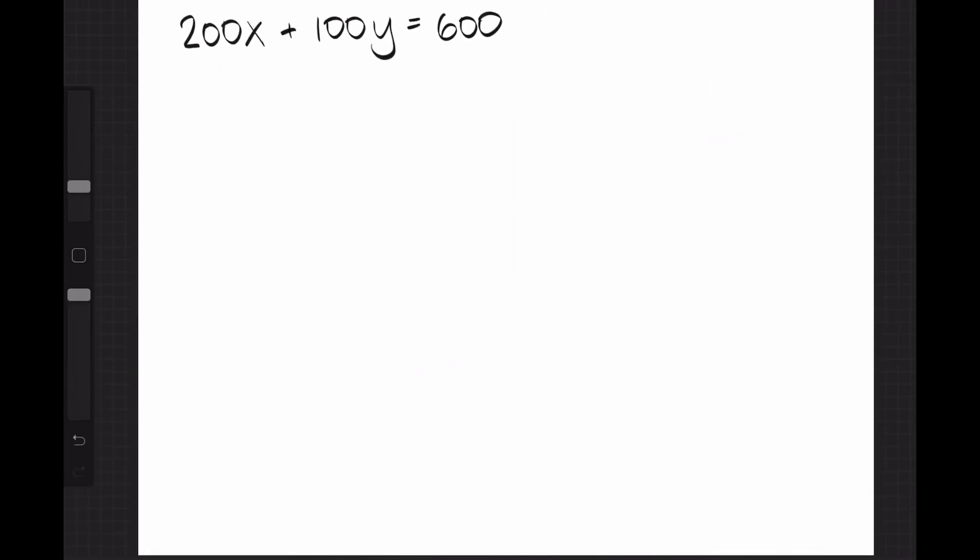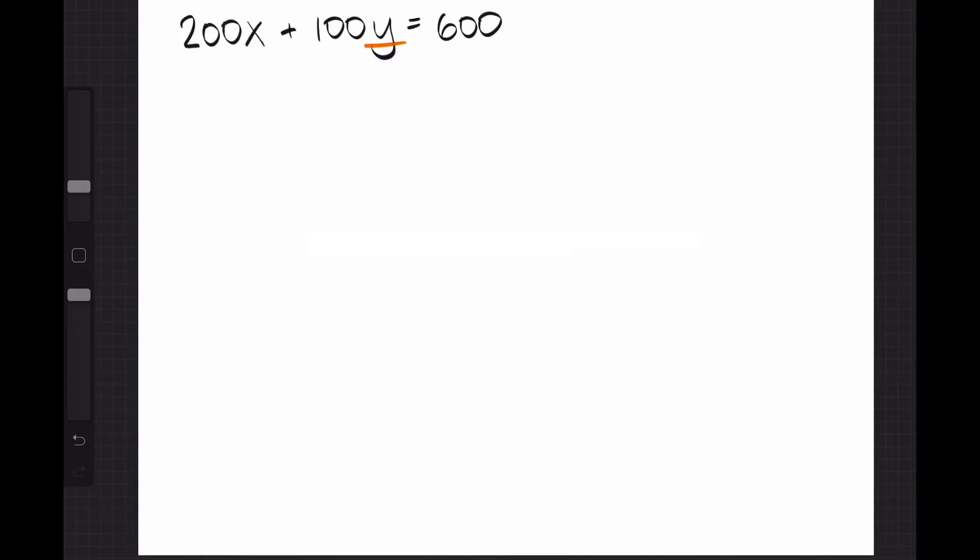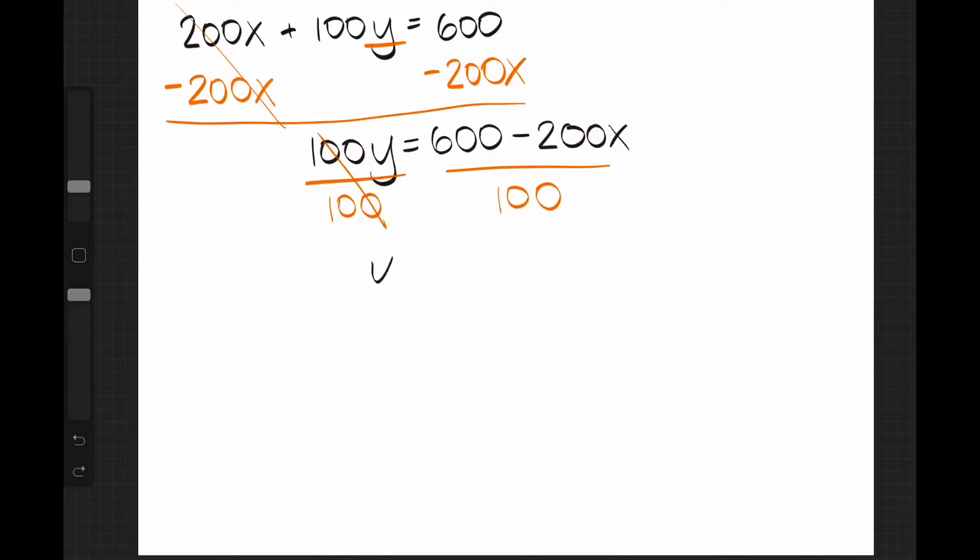To do this, we need to isolate our Y variable, and remember that whatever we do to one side of the equation, we must do to both sides. With this equation, we can first subtract 200X on both sides, which will leave us with 100Y equals 600 minus 200X. Then we can divide 100 on both sides, which will result in Y equals 6 minus 2X. And since I find it easier to view an equation in slope intercept form, we can match the Y equals MX plus B formula and swap these terms to become Y equals negative 2X plus 6.